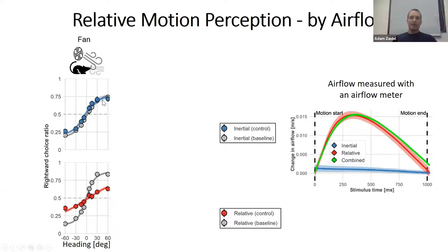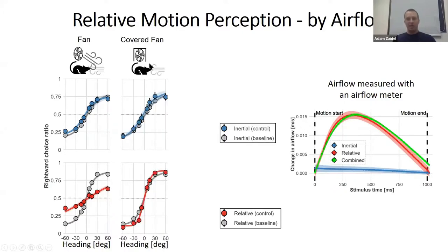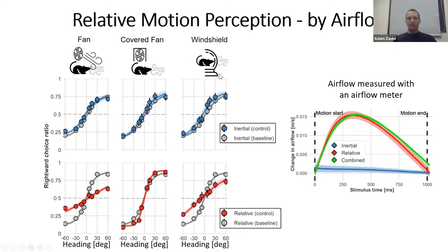We placed a computer fan in the sphere during the stimulus to blow air in different directions. With the fan on, inertial motion perception was unimpaired, but relative self-motion perception deteriorated. Being extra careful, we covered the fans so the noise remained but airflow was not disturbed — and the relative motion cue jumped back to normal. As a third angle, we placed a small windshield in front of the rats during inertial motion stimuli, which again decreased relative motion perception but not inertial motion perception. We feel fairly confident now that rats use airflow to detect self-motion.